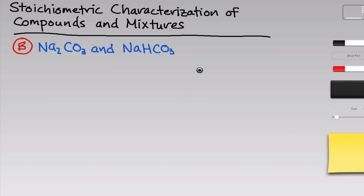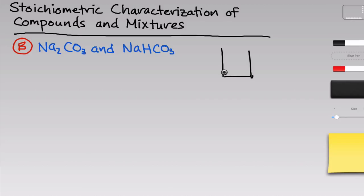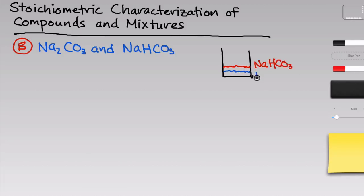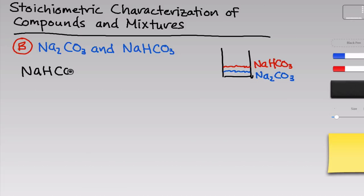In the second part of this experiment, we're going to be dealing with a solid mixture of sodium carbonate and sodium bicarbonate, both of which are white, free-flowing solids. You'll have some sample of the mixture in a reagent bottle, and the goal is to determine the mass percent of the mixture that is sodium bicarbonate (NaHCO3) and sodium carbonate (Na2CO3). We're going to take advantage of a reaction that involves only the solid sodium bicarbonate.